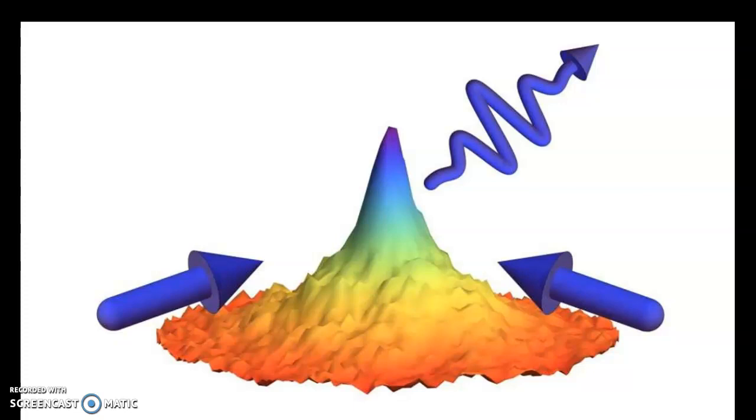A key reason for this is that laser light can photo-associate neighboring atoms into molecules, which then leave the atom trap. So keeping the atoms together to clump has been the issue.